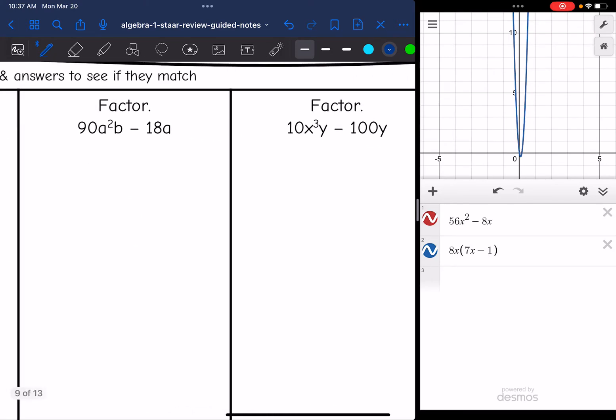All right, let's look at the second one, 90a squared b minus 18a. 90 and 18 have a common factor of 18. a squared and a, the GCF of that would be a, and then b is not a part of my GCF since it's only in the first term. So my GCF is 18a. Now I'm going to divide each term by 18a. 90a squared b divided by 18a is 5ab, and negative 18a divided by 18a is negative 1.